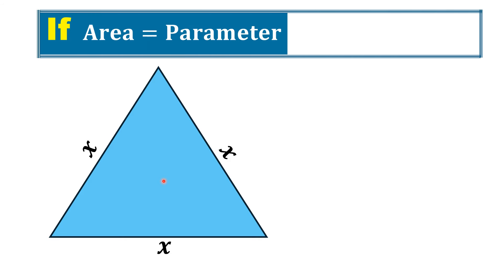Hello everyone. In this problem, we have an equilateral triangle with side length x. If the area of this triangle equals its perimeter, we need to find the value of x.